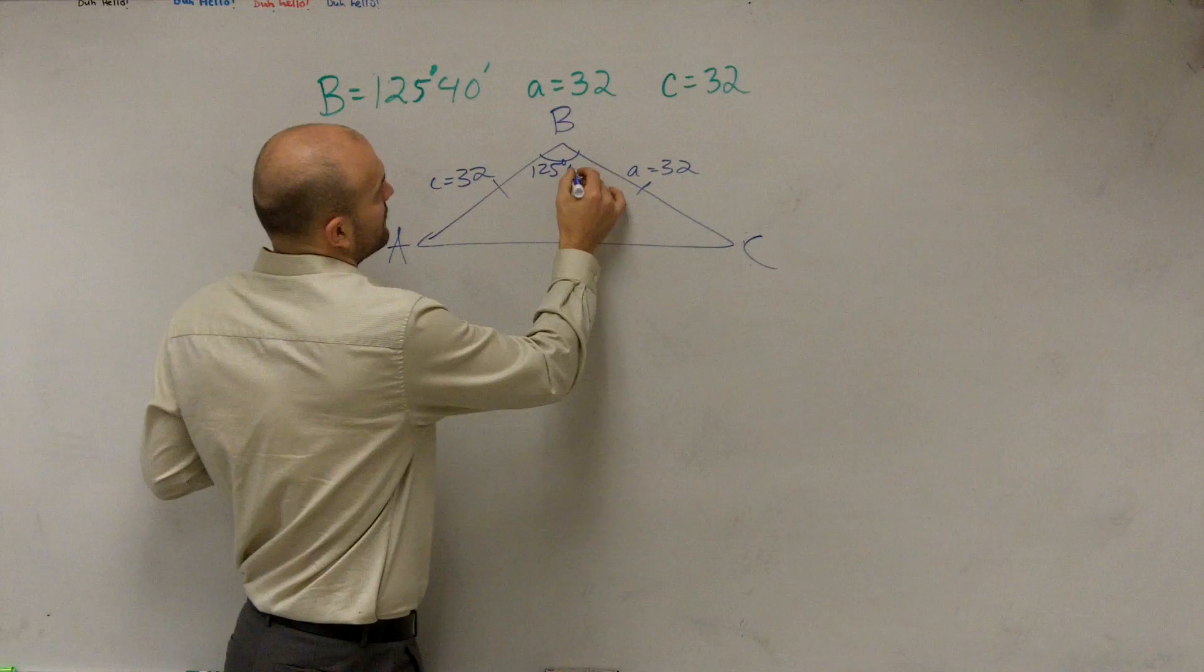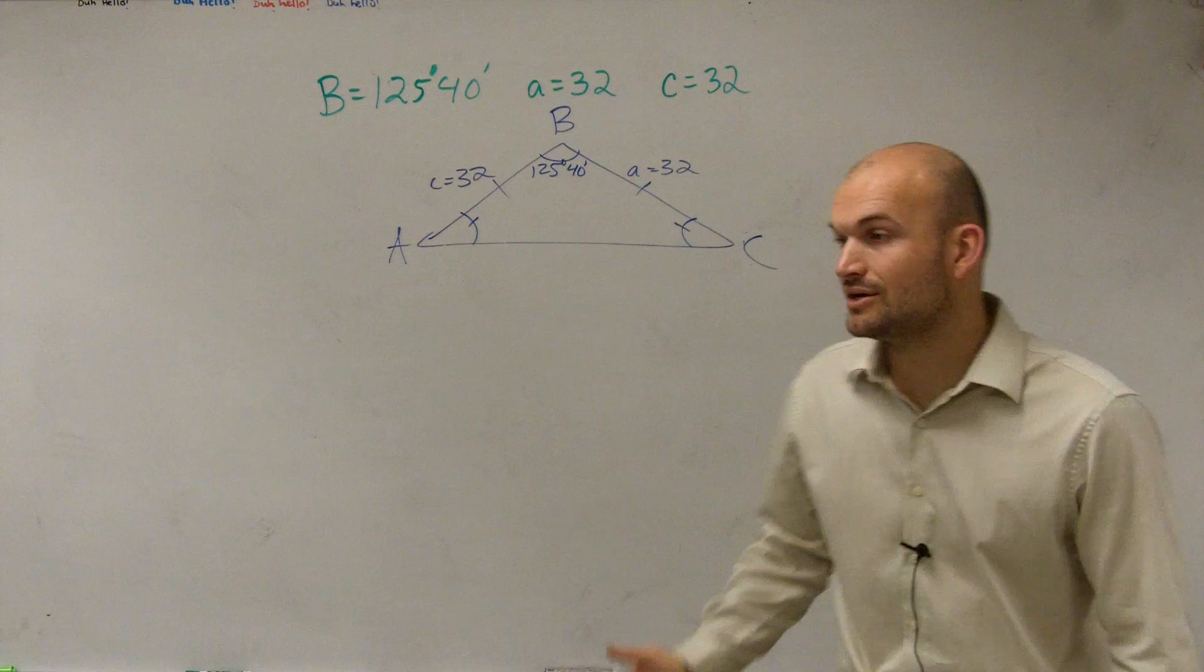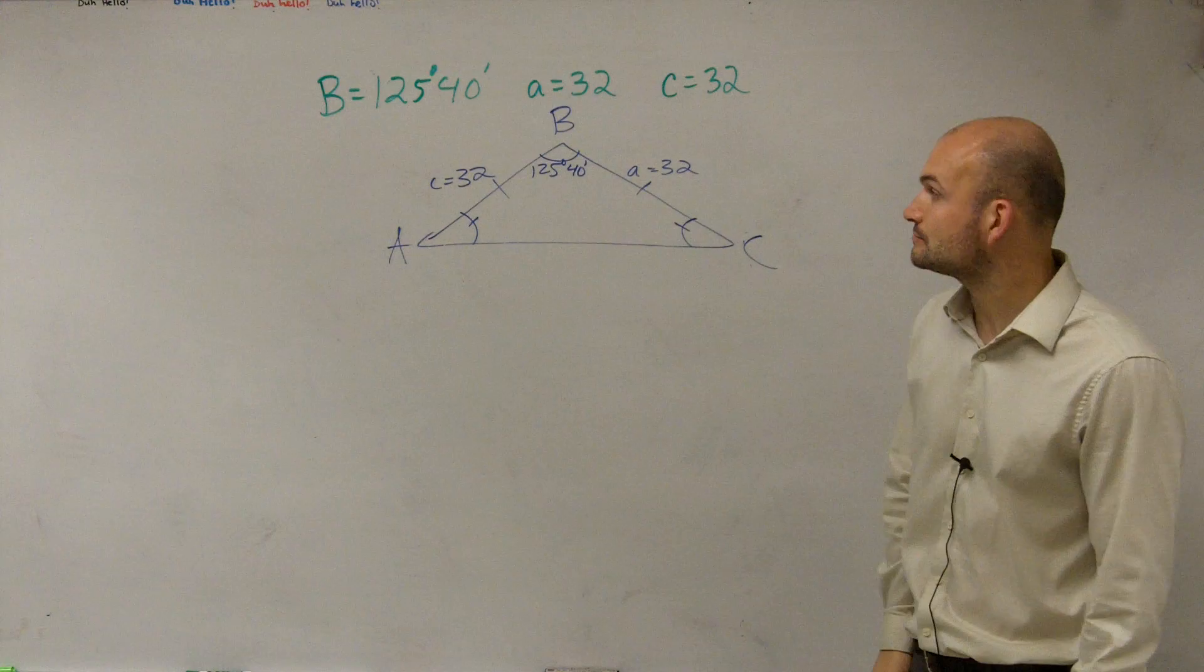But important to know that when you have isosceles triangle, these angles are also going to be equal. So that's going to be nice and helpful when we go and find our missing angle and missing side length, that once we figure out one angle, we're good to go. We can just replicate it.